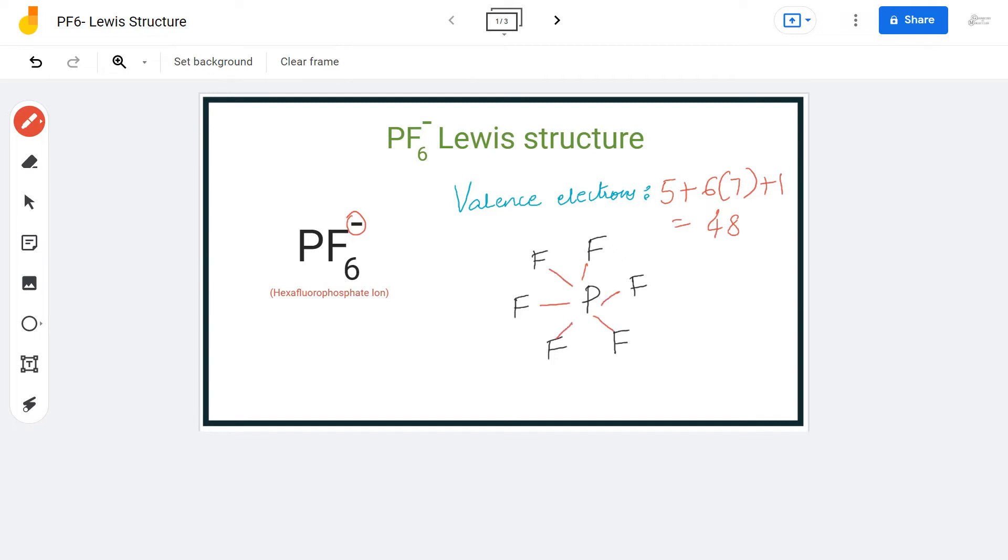I'm going to use lines to make it look more neat. Placing six bonds between phosphorous and fluorine atoms, we will be using up 12 out of 48 valence electrons, and we are now left with 36 more valence electrons.